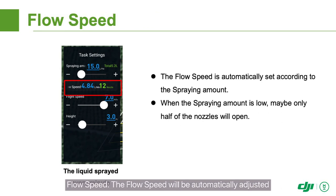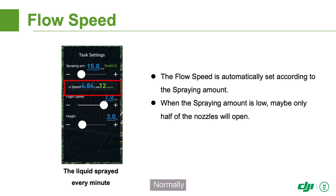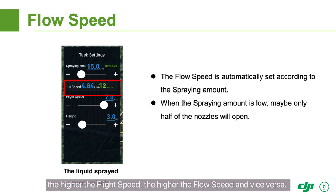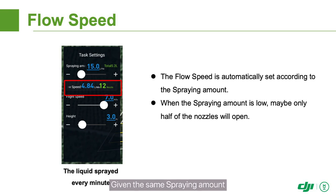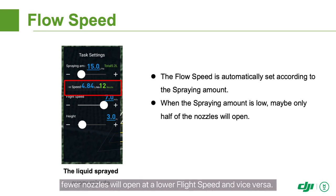The flow speed will be automatically adjusted based on the set flight speed after the spraying amount is set. Normally, the higher the flight speed, the higher the flow speed, and vice versa. The number of open nozzles is determined based on the flow speed. Given the same spraying amount, fewer nozzles will open at a lower flight speed, and vice versa.